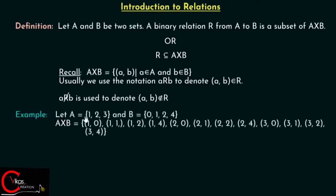Now let's consider one example. Let's say A is a set which consists of {1, 2, 3} and B is a set which consists of {0, 1, 2, 4}. A cross B must be the set which consists of all ordered pairs, where the first element belongs to set A and the second element belongs to set B.